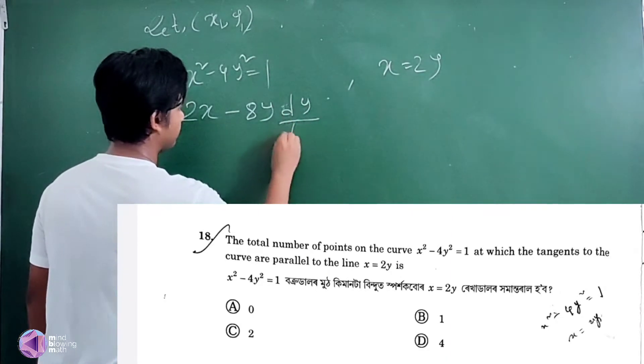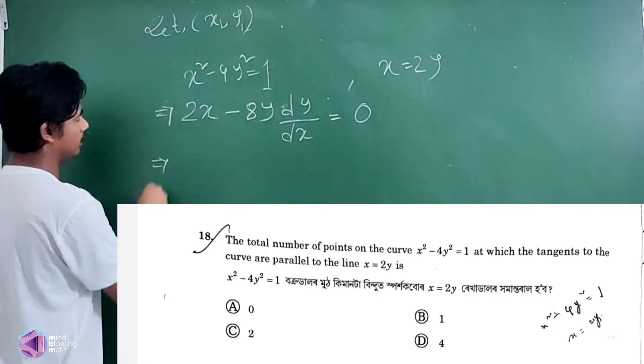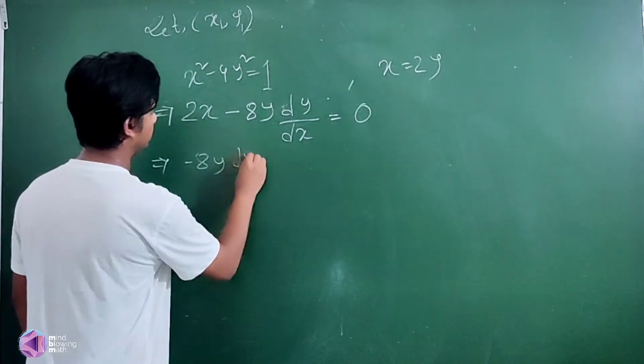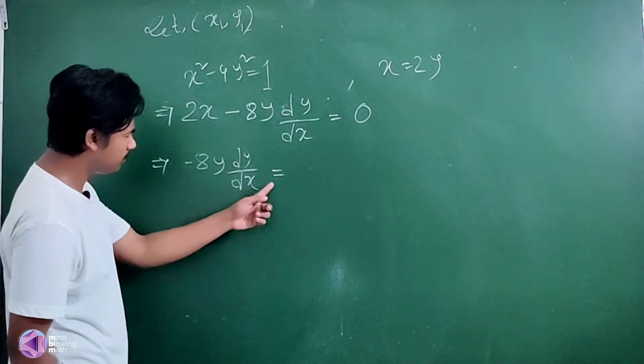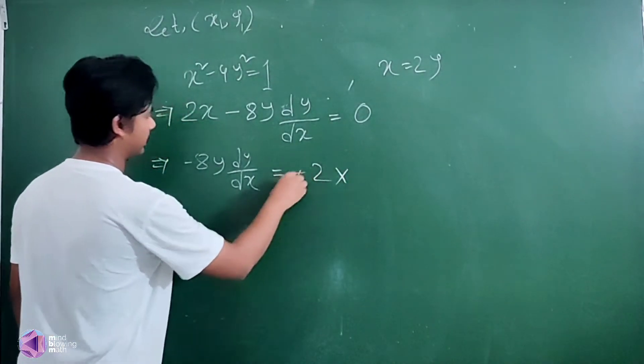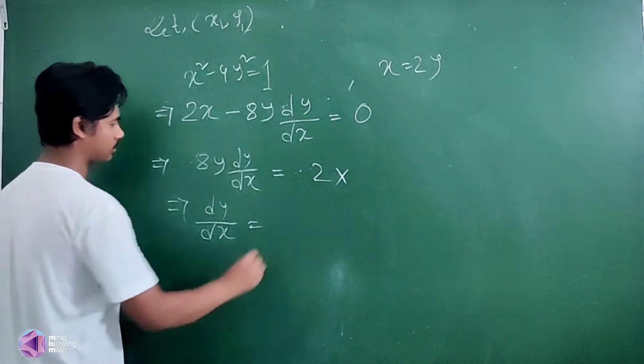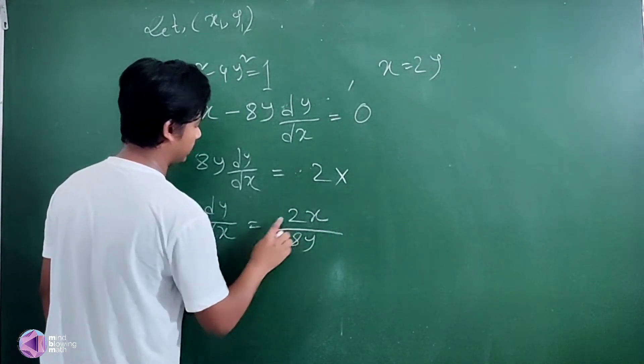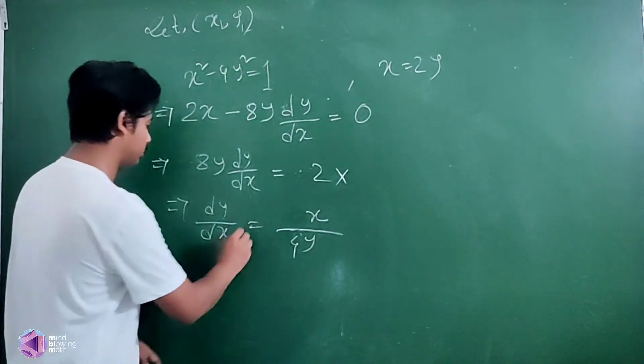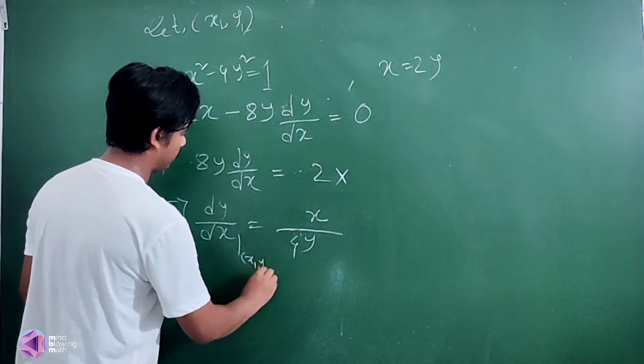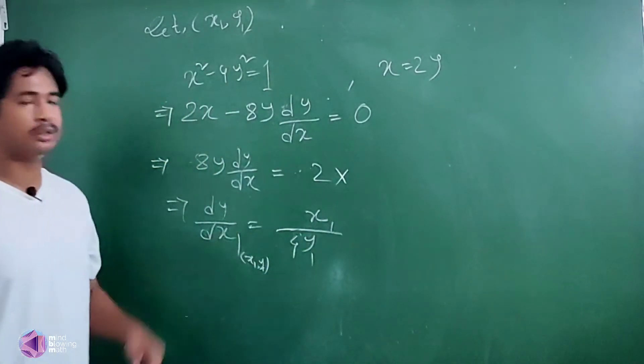dy/dx equal to 2x by 8y. Simplifying, dy/dx is equal to x by 4y. So at the point (x1, y1), the slope is x1 by 4y1.